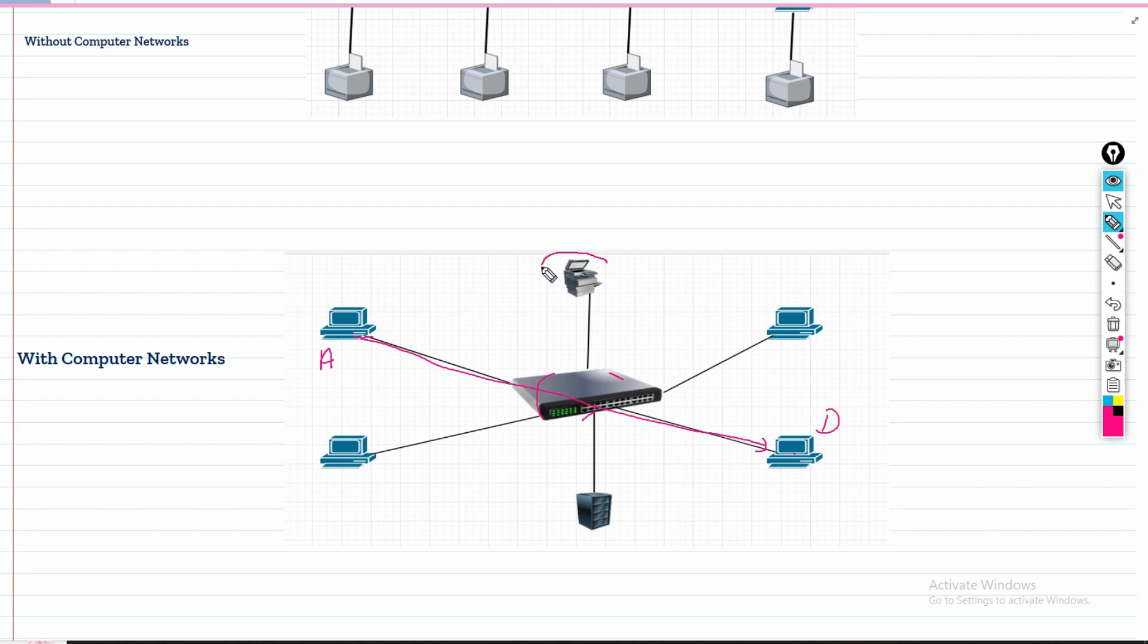You can see there is one centralized printer. PC A wants to print something, PC B wants to print something, PC C wants to print something - there is one single printer here for all the PCs. They can print with no additional or separate printer required because this printer is a network printer connected with each computer.